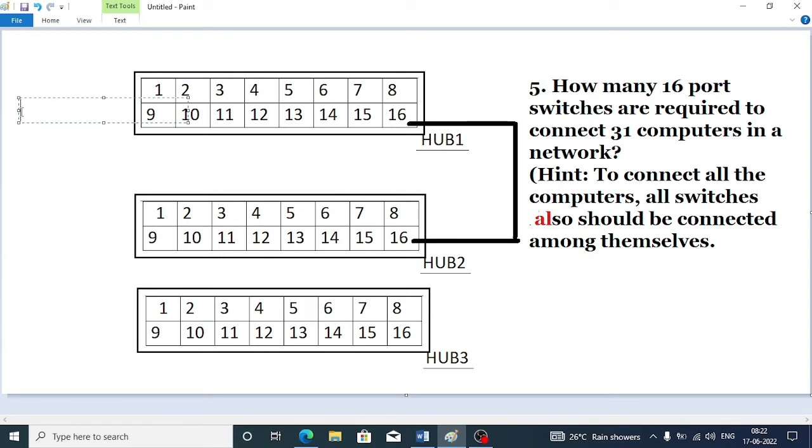From switch 1 we have 15 ports left, and from switch 2, port 16 is already blocked, so we have again 15 ports. We can connect maximum how many computers? If we add both, 15 plus 15 equals 30 computers. But in our network we have 31 computers.